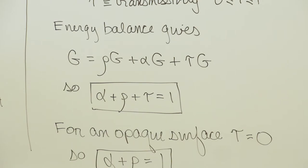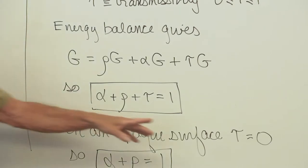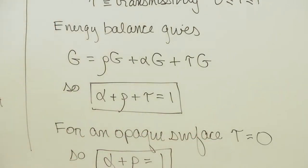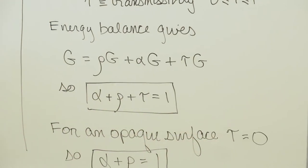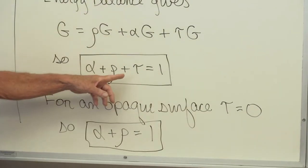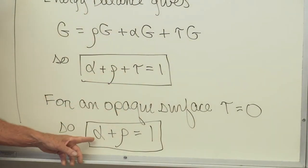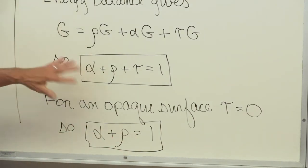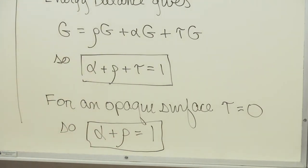If the surface is opaque, the word opaque means the transmissivity is 0. Nothing gets through. If the surface is opaque, tau is 0, so alpha plus rho equal 1. These two equations relate surface properties.